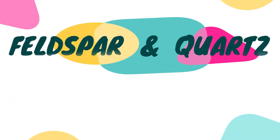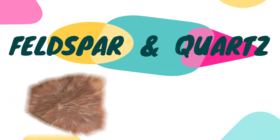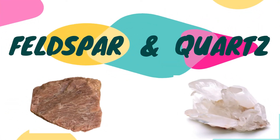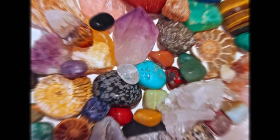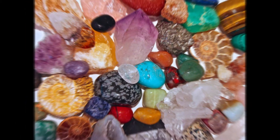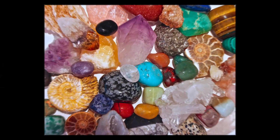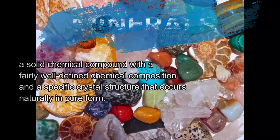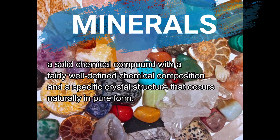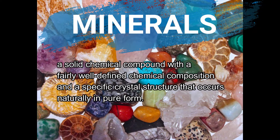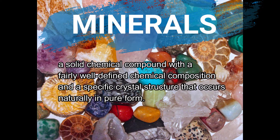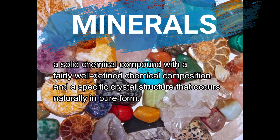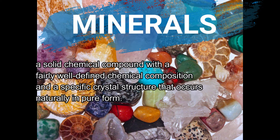Here we are going to talk about two minerals: feldspar and the quartz family. They are both minerals, and minerals are solid chemical compounds with a fairly well-defined chemical composition and a specific crystal structure that occurs naturally in pure form.